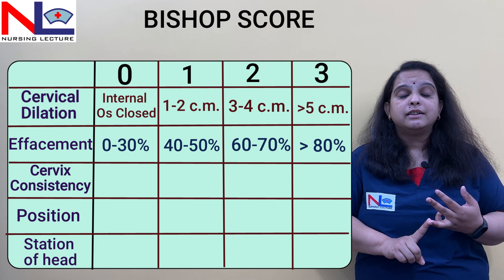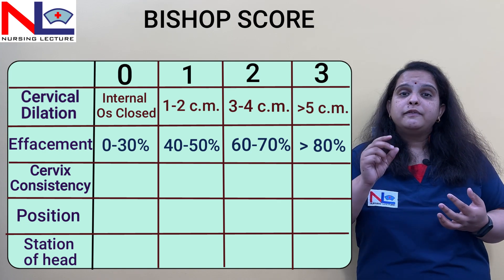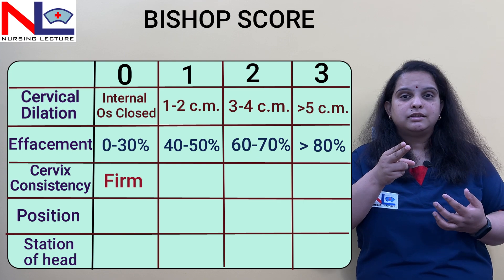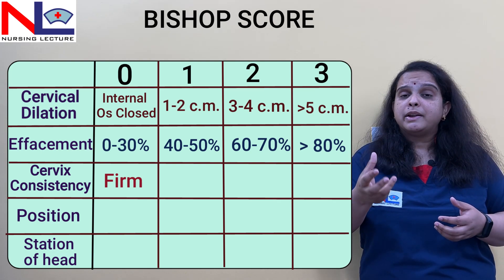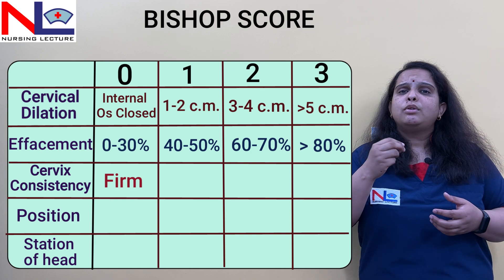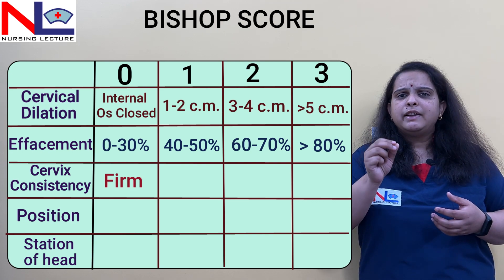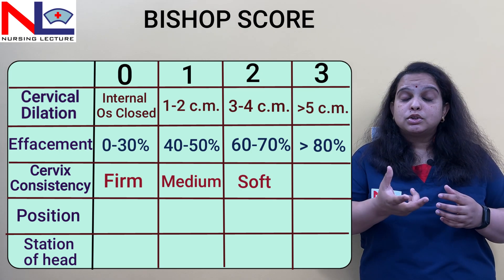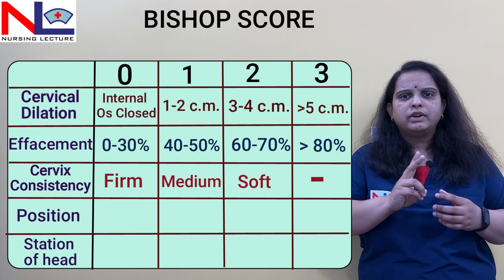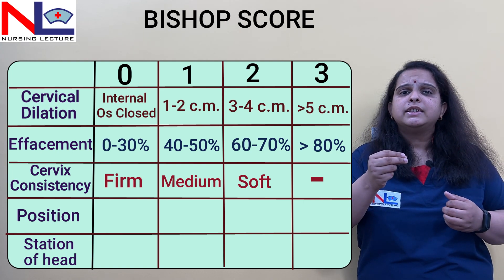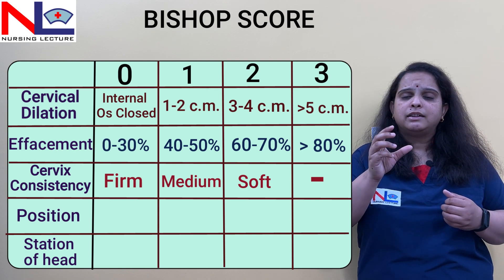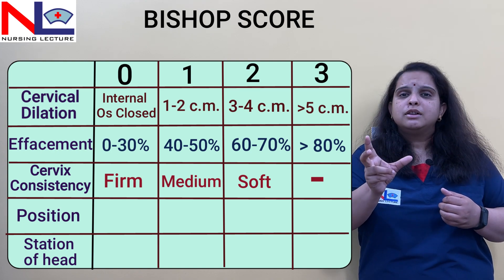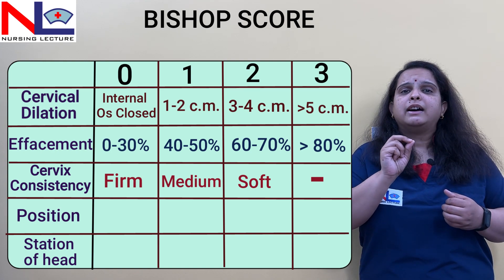The third parameter is cervical consistency. On PV examination, if the cervix feels very firm and hard — meaning the collagen fibers are not broken down — we score 0. If it feels medium, neither hard nor soft, we score 1. If it feels soft, we score 2, which is the maximum score for this parameter. A soft cervix means the collagen has broken down, making it easily dilatable.